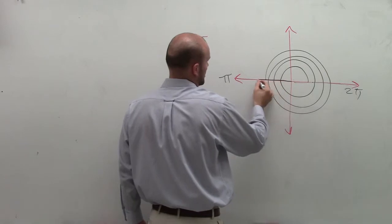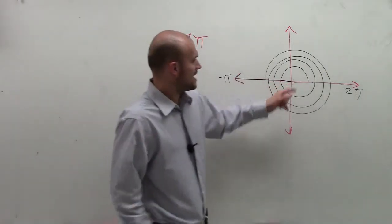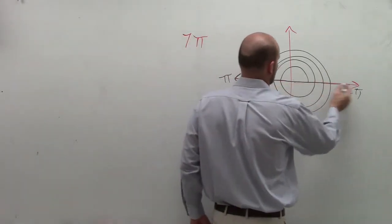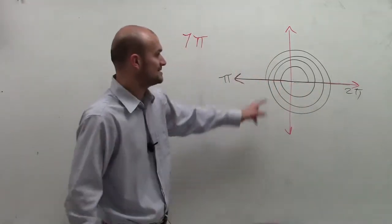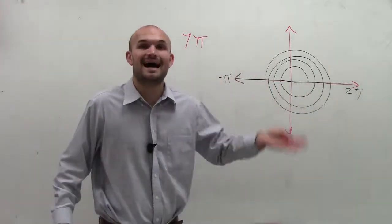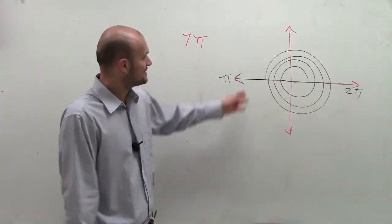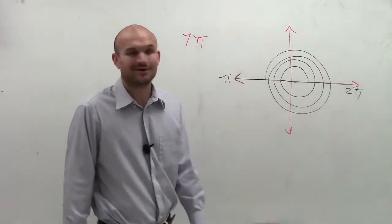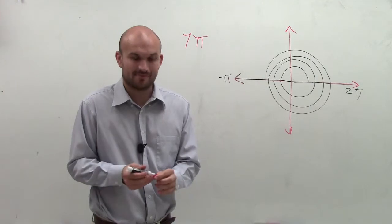So we draw our terminal side right there. So we have our initial side and then our terminal side. And you can see, to get to 7 pi, that was a lot of revolutions. But that's going to be your angle in radian term, 7 pi.